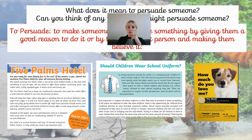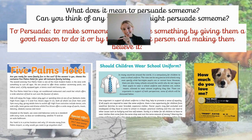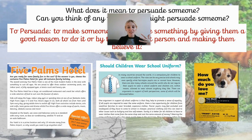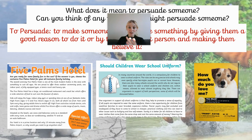'In many countries around the world it's compulsory for children to wear a school uniform' - so it's an argument. And then also - this is the sort of text we're going to be looking at planning next week - there's a sad puppy: 'How much do you love me?' - trying to persuade someone to give to charity, to help the Dogs Trust. We're looking at endangered species next week, but for now we're just looking at persuasive language.